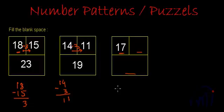So what will this number be? This number will be 17 minus 3. 7 minus 3 is 4, and we write 1 as it is. So the number here should be 14.